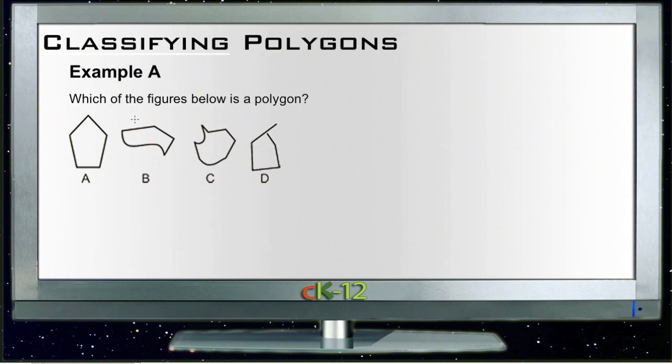Example A, which of the following figures is a polygon? So there are four figures here. Only one of them is a true polygon. The other three are fake and false.